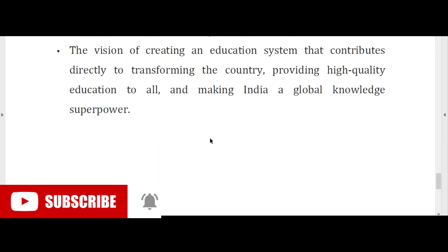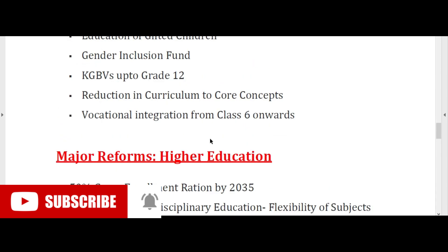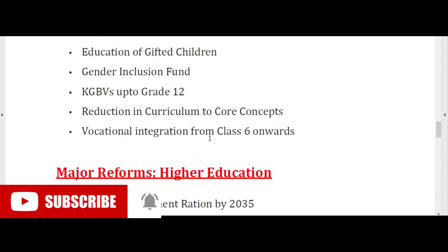In summary, the 5+3+3+4 structure means: 5 years Foundational (nursery, KG, LKG, UKG, class 1 and 2), then 3 years Preparatory (classes 3, 4, 5), then 3 years Middle (classes 6, 7, 8), and finally 4 years Secondary (classes 9 to 12). This restructured exam pattern is a key requirement of the new framework.